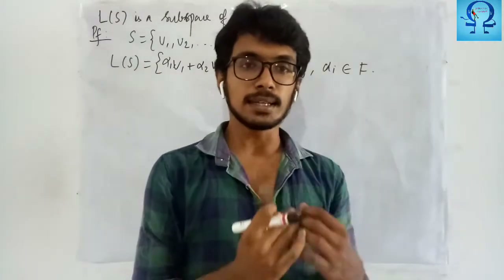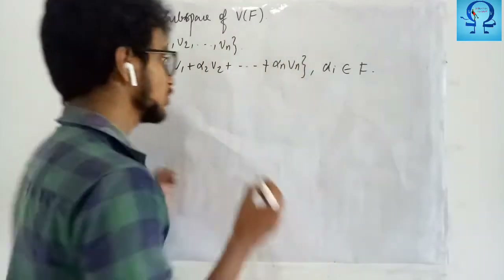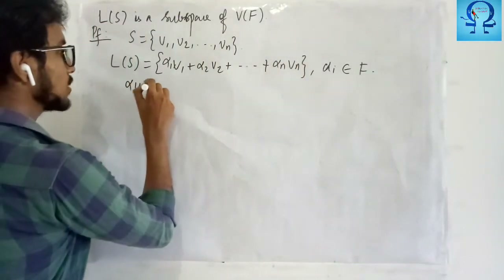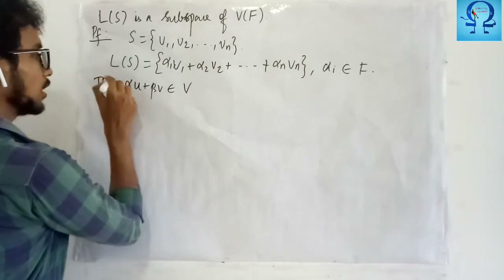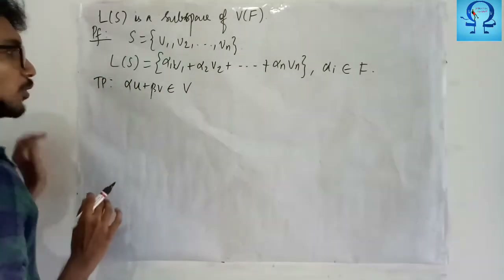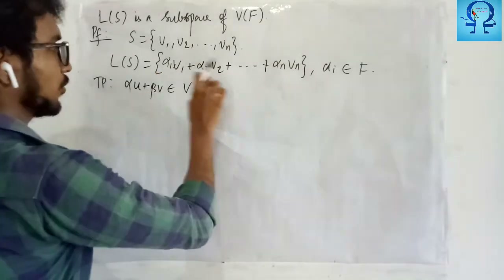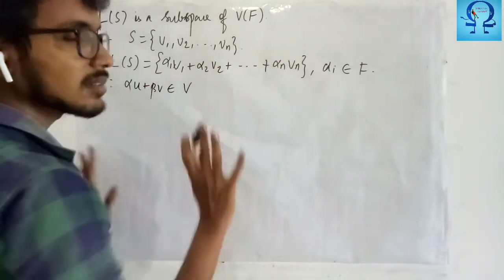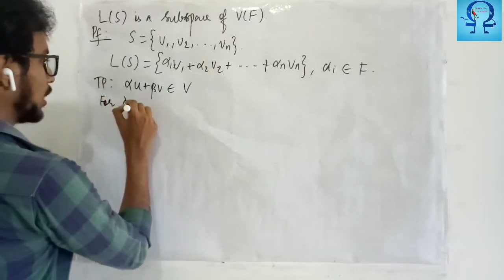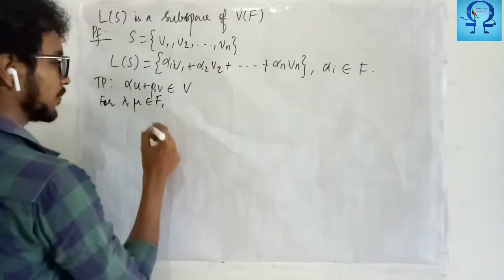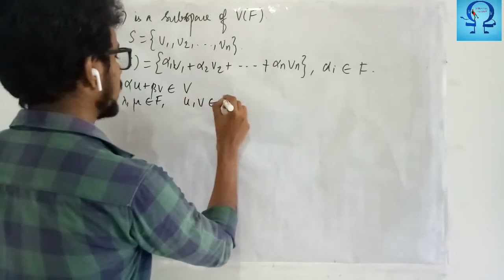In order to prove some subset is a subspace, we have to check whether the subspace condition is satisfied. To prove this, let me choose scalars lambda and mu from F, and let me take two entries u and v in L(S).